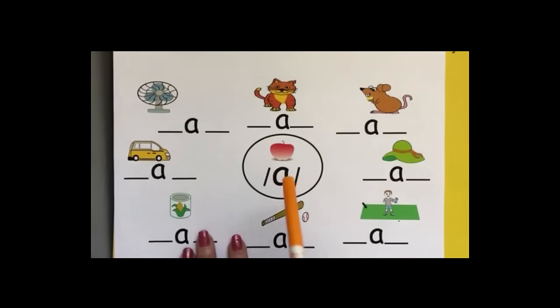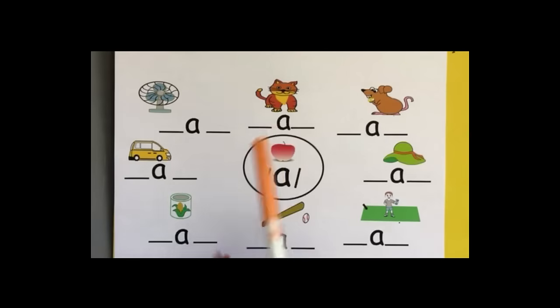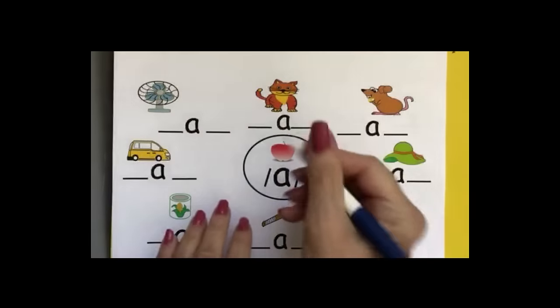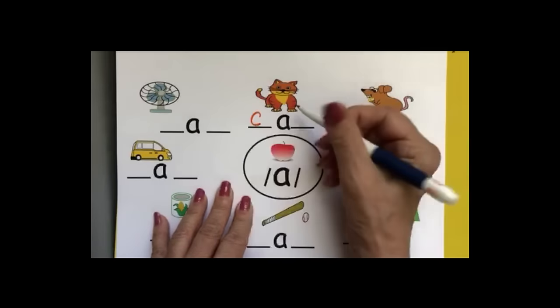So let's look at a beginning page. There's our apple, and I would have the kids begin with the word cat, c, c, hard C.